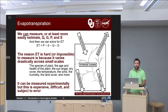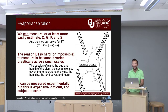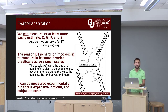We can measure or at least estimate Q for stream flow, G for groundwater, P for precipitation, and S for storage change. We can then rearrange that equation and solve for ET. So mathematically, ET = P minus S minus Q minus G.